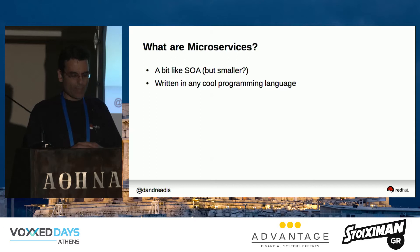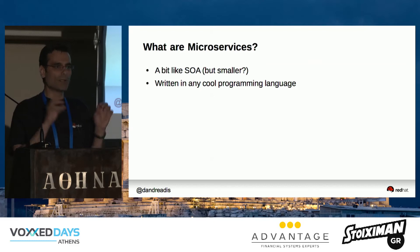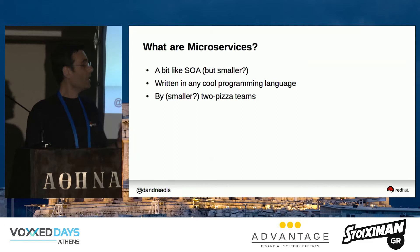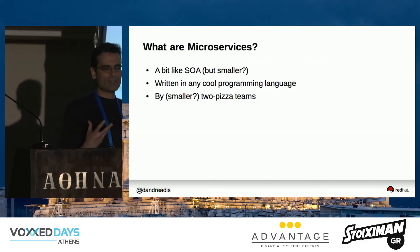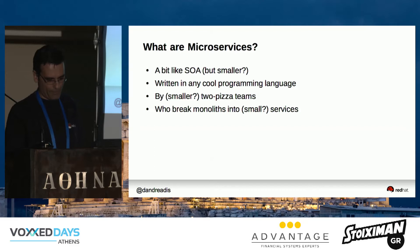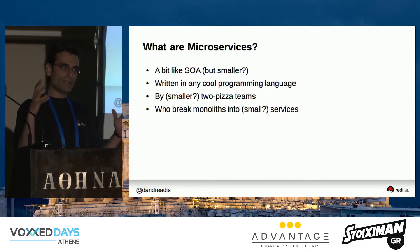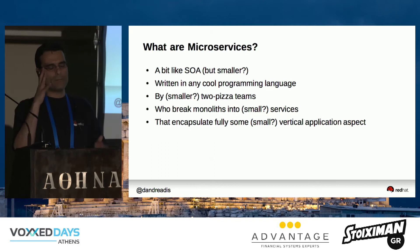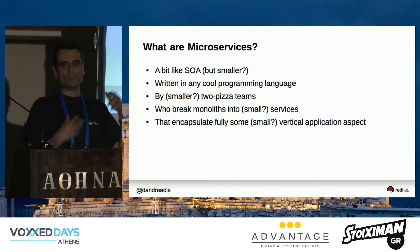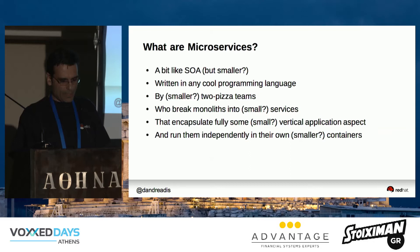With microservices, you can use any programming language that's fit for the purpose. You need a small team — there's this rule that two pizzas can feed the whole team. You break up the older bigger system into smaller pieces, and each piece encapsulates some vertical aspect, meaning you try to control the full stack from the web interface to the database so your service is independent.